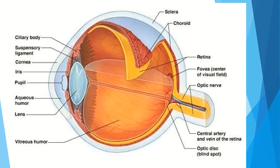And this is the vitreous humor — the jelly-like substance which fills the spherical cavity behind the lens. It helps to maintain the spherical shape of the eye.